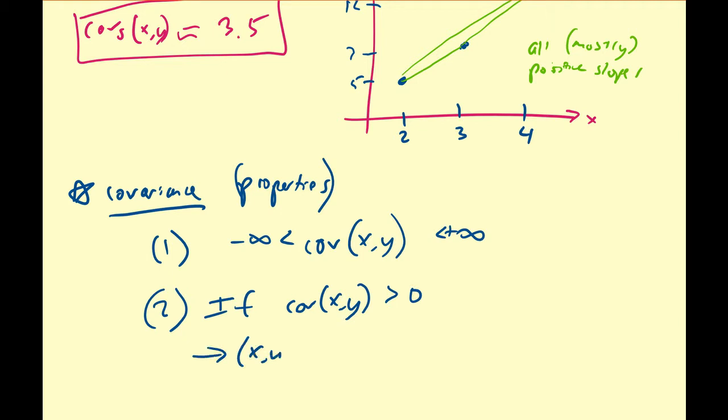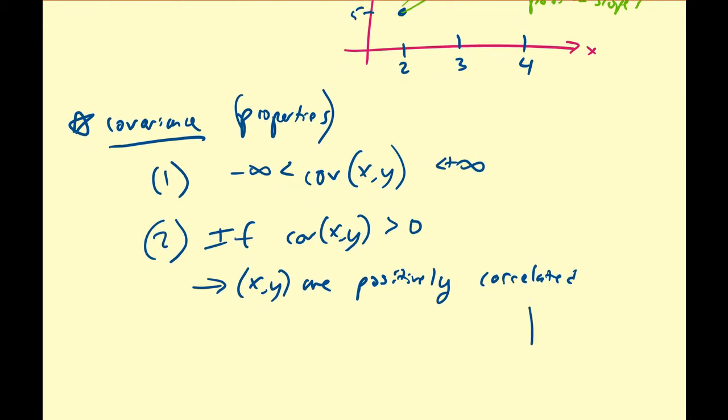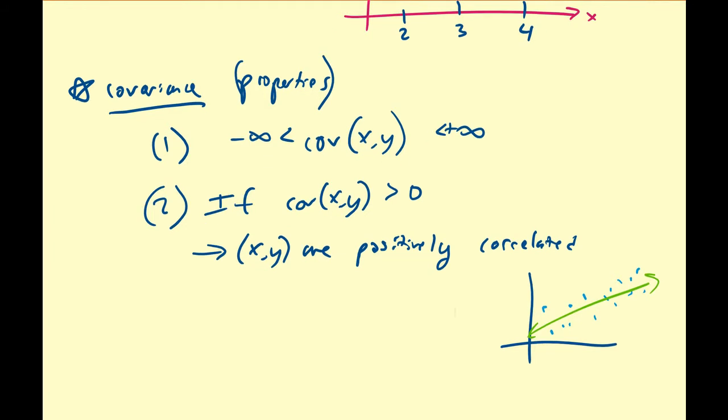The second is if the covariance between X and Y is greater than zero, then this will imply that X and Y are positively correlated. That is, you pretty much see an upward trend in the data. So if you plot a bunch of points, definitely there's going to be a positive upward trend for the majority of the data.